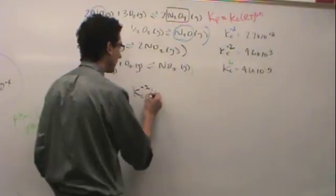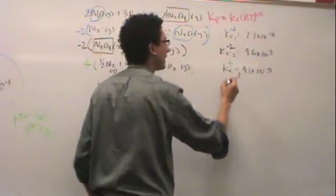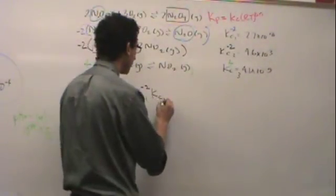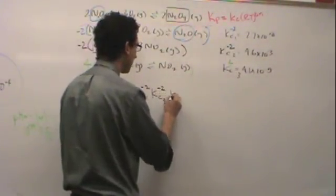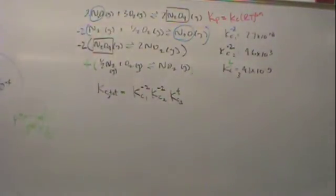Now these have to be multiplied. Kc1, I'll just call this number one, number two, and number three just to distinguish them. Kc1 to the negative two, Kc2 to the negative two, and then Kc3 to the fourth. So plug in those numbers to find the Kc total.